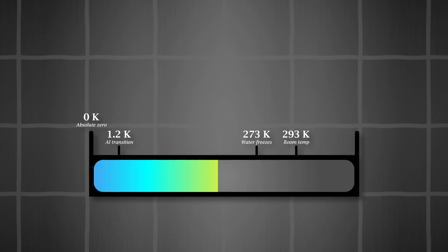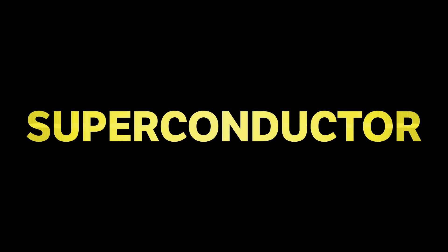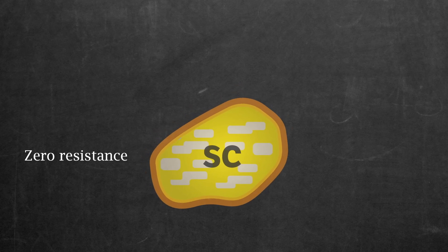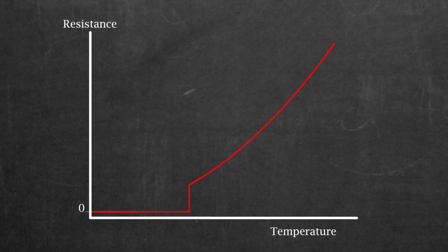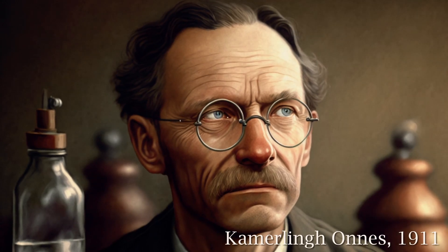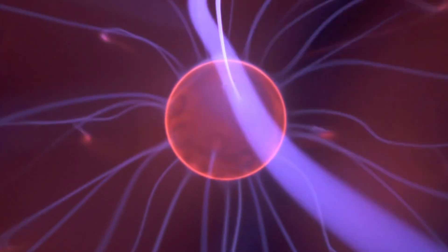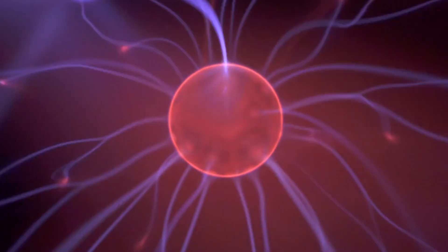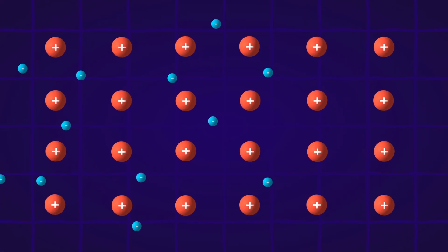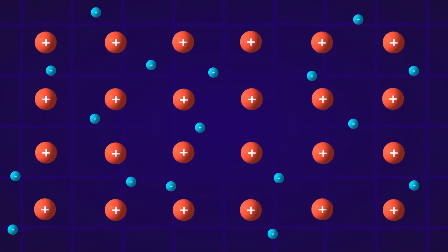As we cool down below the critical temperature of 1.2 Kelvin the aluminum suddenly transitions from a normal metal to a superconductor. A superconductor is a material that has zero resistance below its critical temperature. A sudden drop first observed by Kamerling Onnes in 1911. As a result currents can flow without a single loss. Meaning that inside a superconductor electrons never ever bounce off of atoms.